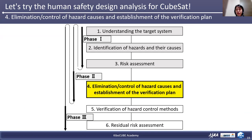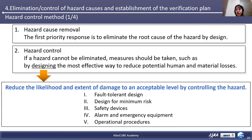In the next step, we begin to eliminate or control the hazard causes and establish the verification plan. After the risk has been assessed, you need to consider how to eliminate and control the hazard causes. The first priority is to eliminate the root cause of the hazard by design — for example, do not use toxic materials. If a hazard cannot be eliminated, measures should be taken to reduce potential human and material losses. Our goal is reducing the frequency and extent of damage to an acceptable level by controlling the hazard. There are five control methods, introduced on the next slide.